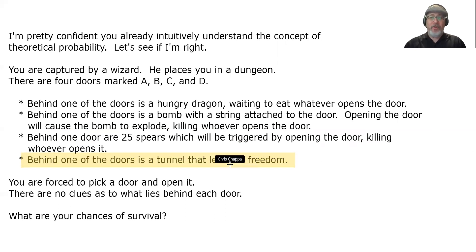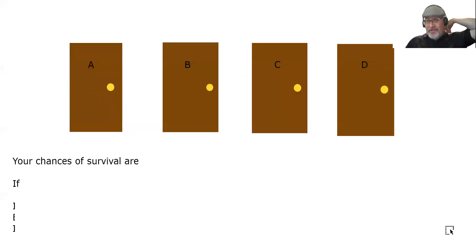You are forced to pick a door and open it. There are no clues as to what lies behind each door. What are your chances of survival? I get the feeling you already know the answer. There are four doors. One of them leads to survival. Well, I should say leads to freedom. There's no guarantee that if you get free, then you'll survive. So we'll just pretend it says, what are your chances of freedom? Well, do you know it? If you need some help, here's a picture of four doors labeled A, B, C, and D.